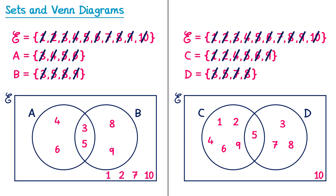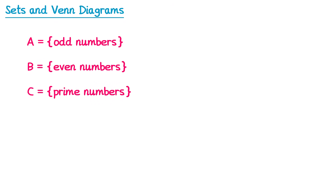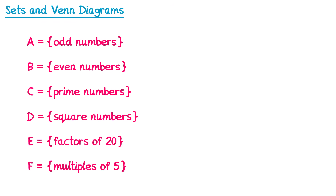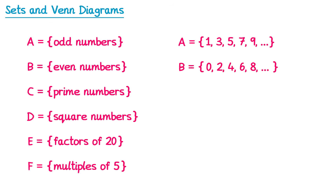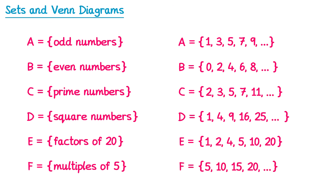Sometimes a question defines a set in terms of words rather than numbers — for example, set A could be odd numbers, set B even numbers, C prime numbers, D square numbers, E factors of 20, and F multiples of 5. When sets are written like this, it's usually easier to write them out as numbers first. Assuming our universal sets don't include negative numbers: odd numbers are 1, 3, 5, 7, 9, ...; even numbers are 0, 2, 4, 6, 8, ...; primes are 2, 3, 5, 7, 11, ...; squares are 1, 4, 9, 16, 25, ...; factors of 20 are 1, 2, 4, 5, 10, 20; and multiples of 5 are 5, 10, 15, 20, ...